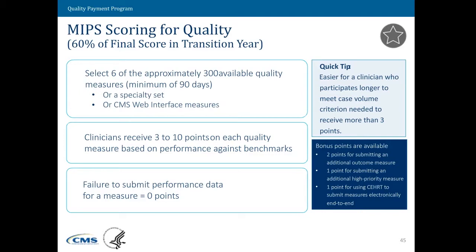If we're able to reliably score it against the benchmark — and if we have enough sample size and we have a benchmark — then we can get up to 10 points based on how well you do on those measures. But the biggest thing is that if you don't submit a measure, you get zero points. So if you submit even to test your pace, you get a minimum of three points, but you can get up to 10 points, especially if you submit more cases so that we can actually measure you. There are also bonus points available for electronic reporting and for selecting outcome measures or other high-priority measures.